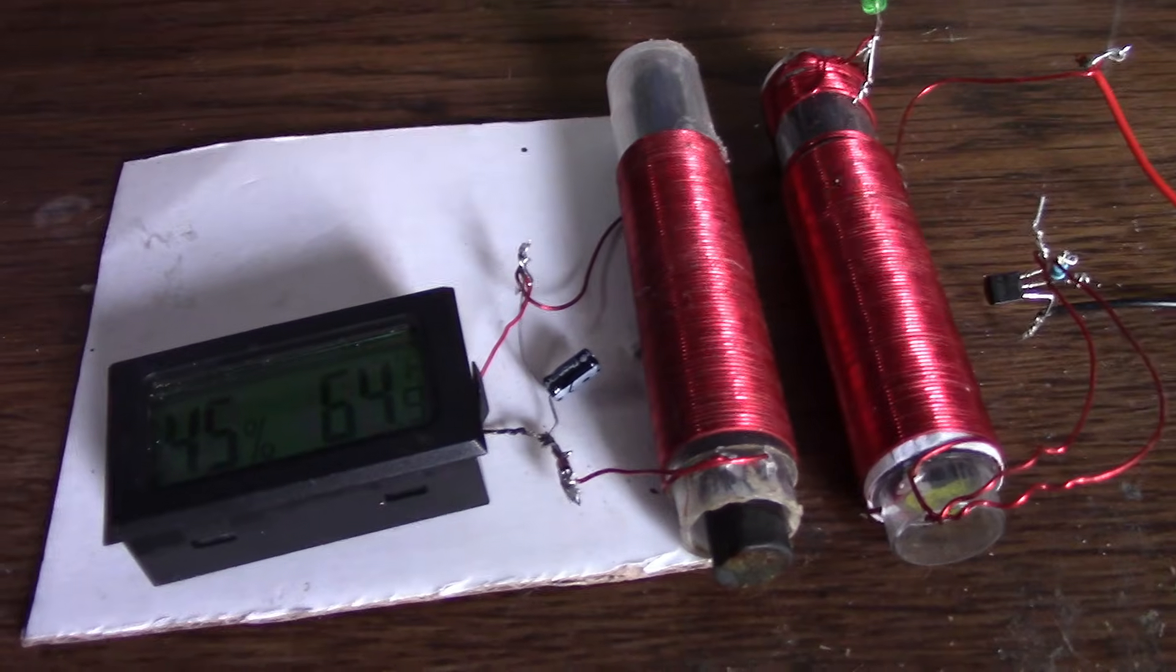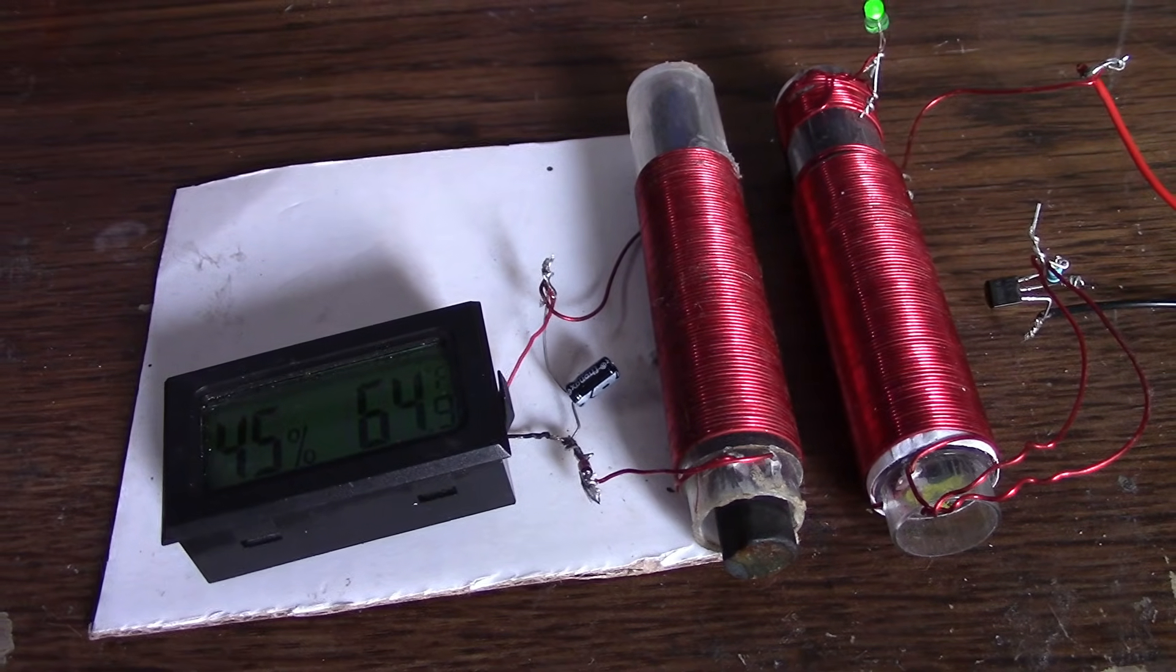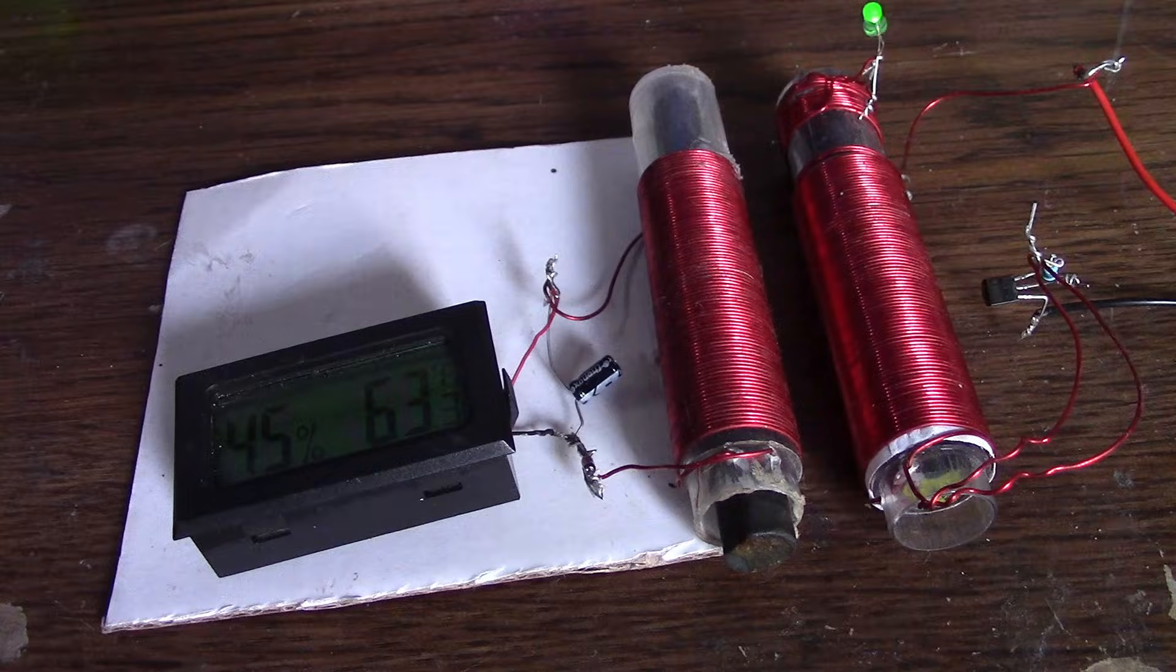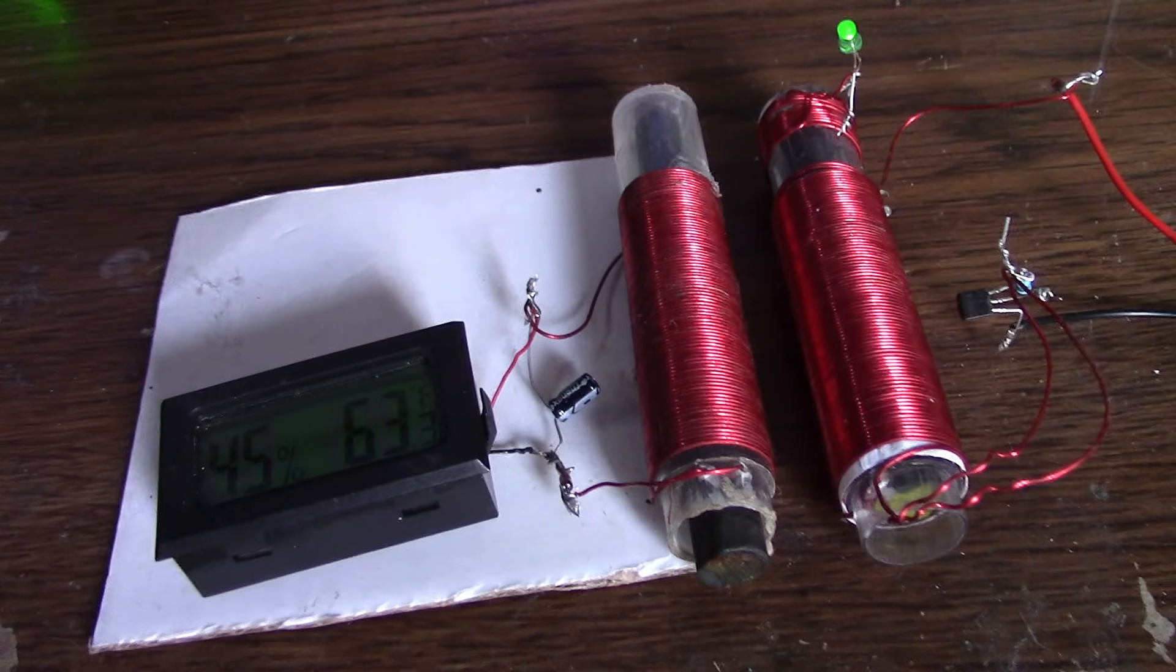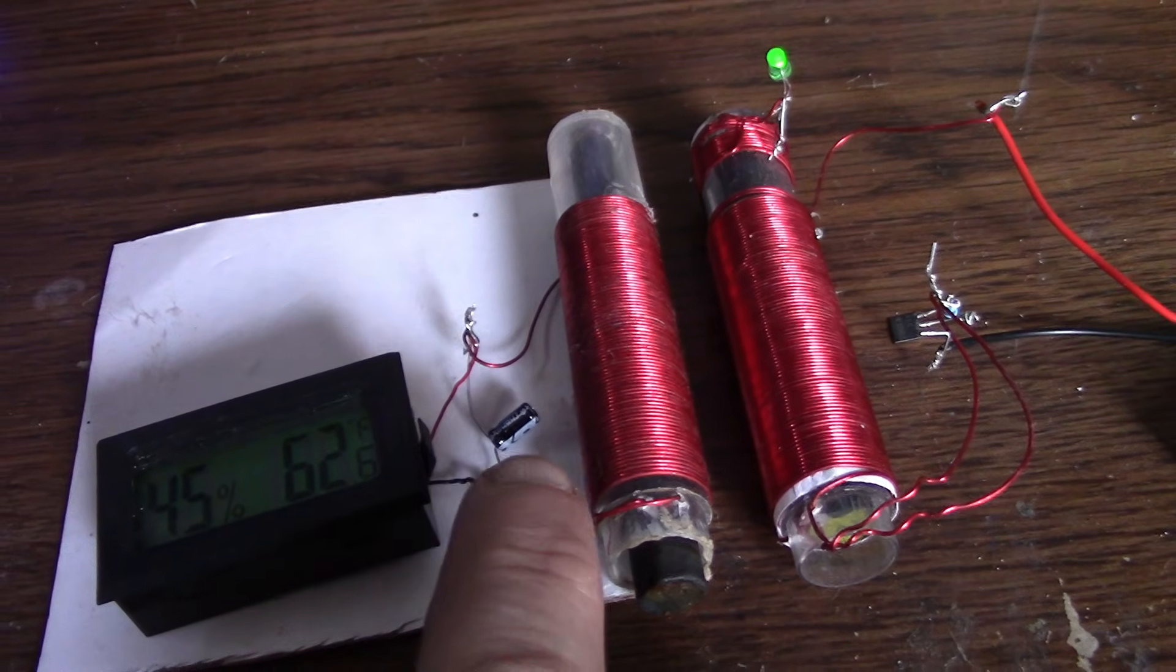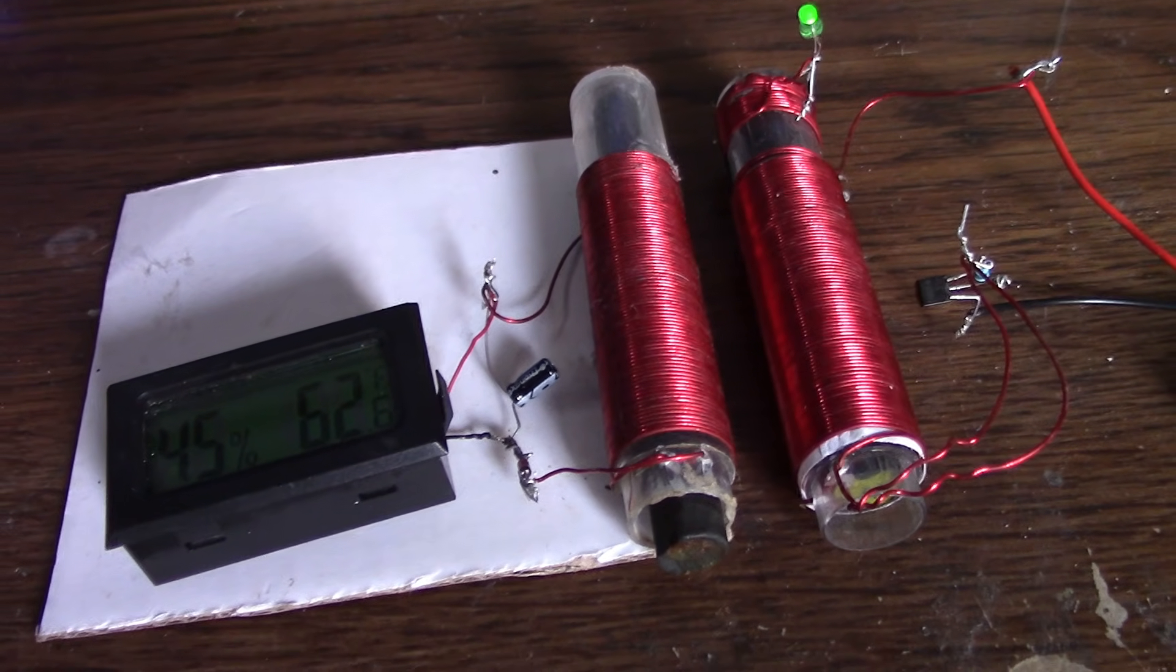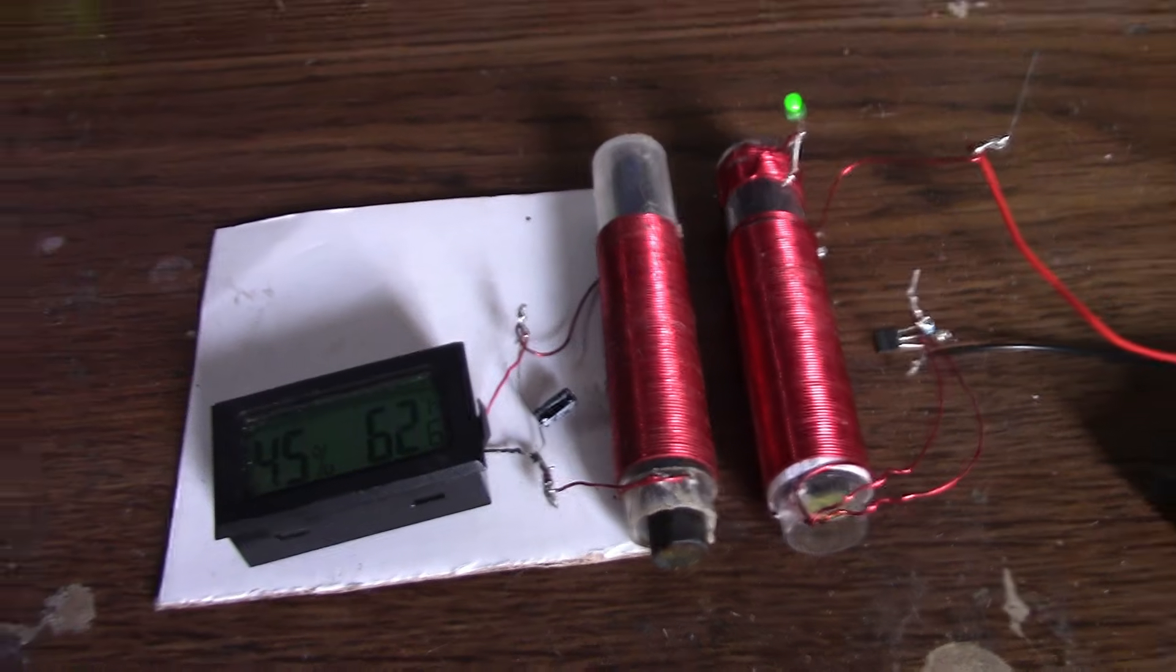And then there's this thing which is being powered by the wireless electricity output. It's a temperature and humidity sensor. The wire in here is a diode, negative one going into the negative, plus across the capacitor with the positive. We end up with that being powered, and I think that's quite effective, quite nice.